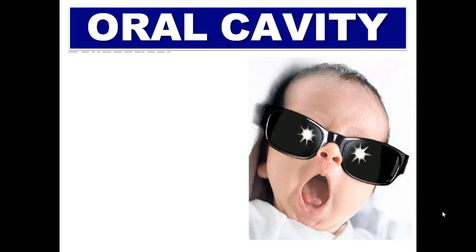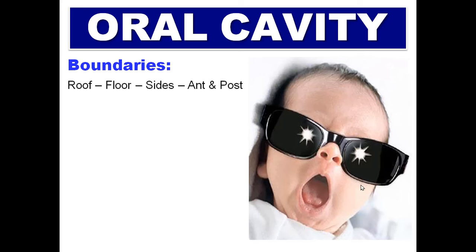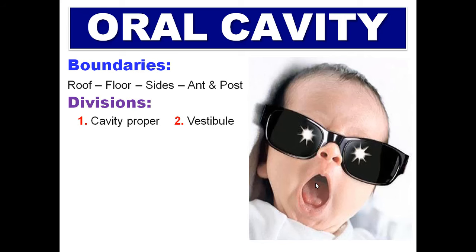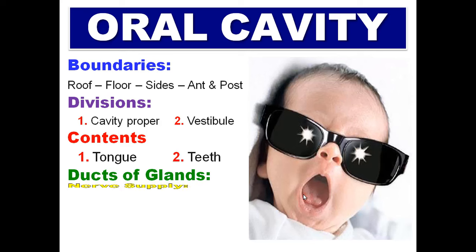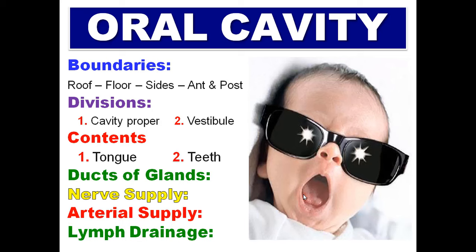Regarding the oral cavity, I will talk about the boundaries: roof, floor, sides, anterior and posterior. Then the divisions of the oral cavity — oral cavity proper and vestibule — and then the contents: the tongue and the teeth, and then the ducts of glands opening into the oral cavity. Nerve supply, arterial supply, and lymphatic drainage.